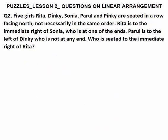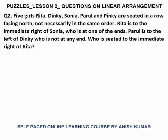Question number two — pause the video, try to solve yourself, then look at the way I have solved. Treat this lesson two as your practice test. Now five girls — Rita, Dinky, Sonia, Parul, and Pinky — are sitting in a row facing north. You can make the five seats; this direction is north.